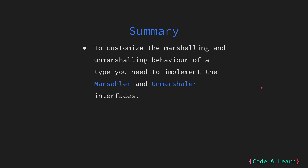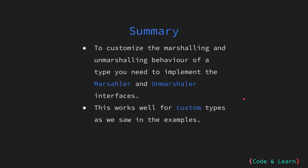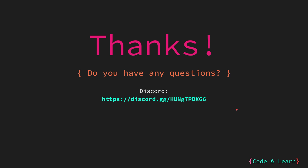Let's summarize everything we learned in this lesson. If you want to customize the marshaling and unmarshaling behavior of a custom type, you need to implement the marshaler and unmarshaler interfaces. As we saw in the examples, this works well for types created with iota where values are integers but you want them represented as strings in JSON, and also when you want to validate the type before converting to JSON data or vice versa. That's it for the lesson — I hope you enjoyed it. If you have any questions, please post a comment or reach out to our Discord server. Until next time, happy coding.